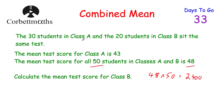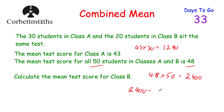We know that in class A there are 30 students and their mean is 43. So if we added up all their scores and divided by 30, we'd get 43. So if we take 43 and multiply by 30 — 43 multiplied by 30 is 1,290. So the total of class A's marks is 1,290. We know the total for both classes is 2,400, so if we subtract we can find the total for class B. 2,400 take away 1,290 equals 1,110. So the total of all scores in class B is 1,110.